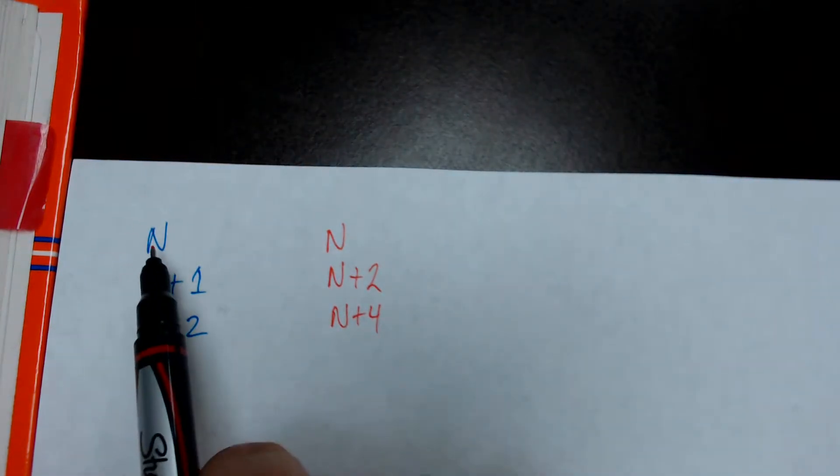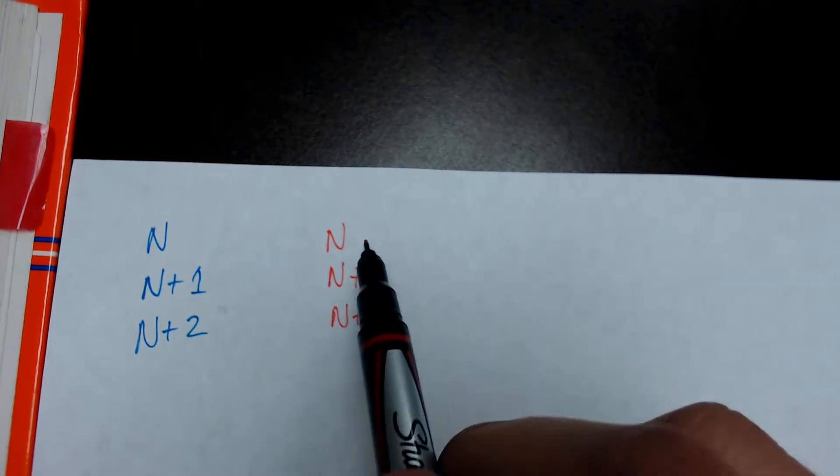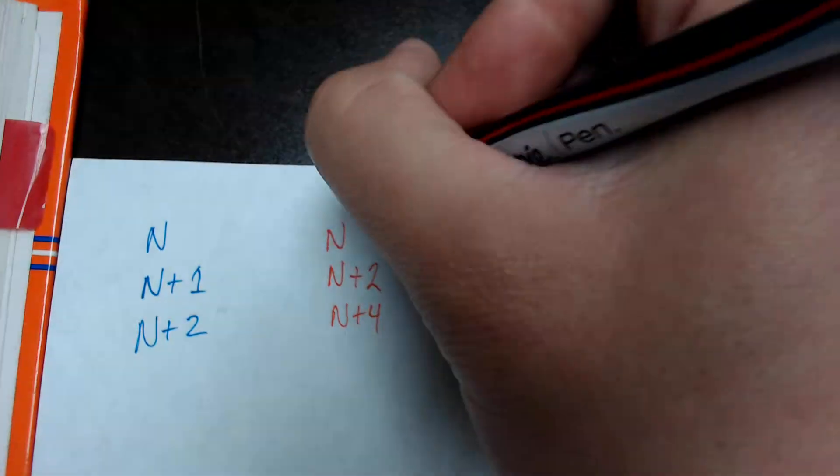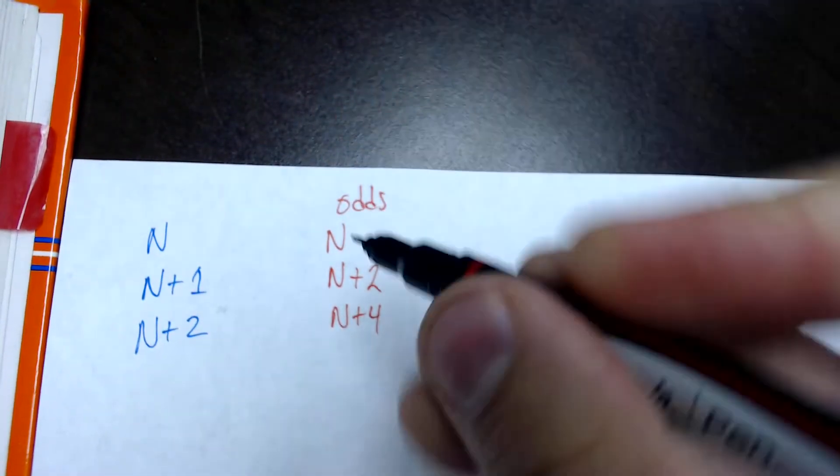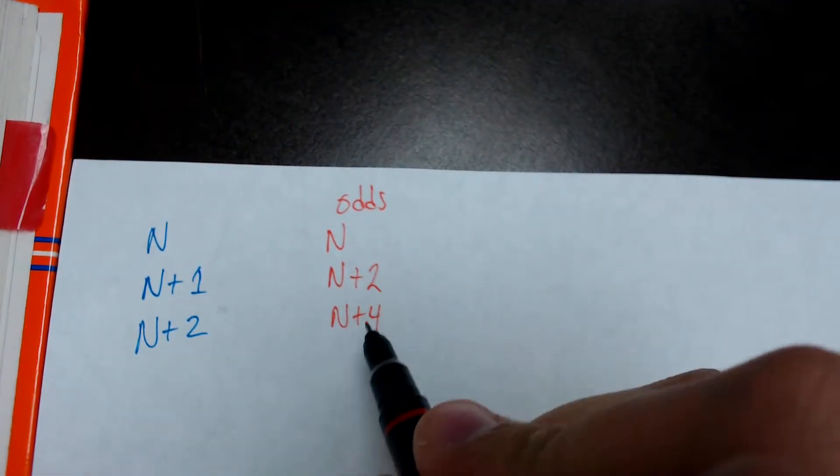So 1, 3, and then the next number is going to be 5. How much do I have to add to 1 to get to 5? 4. So, then it's going to be n plus 4. So, you see the trend here. For odd numbers, we start with the first number, we count up by 2.